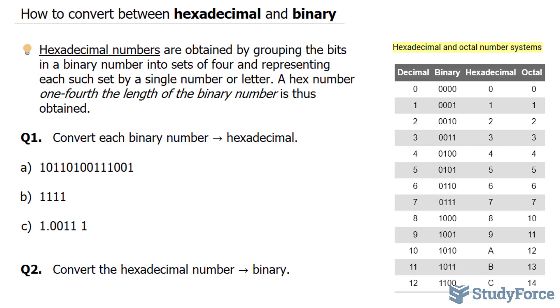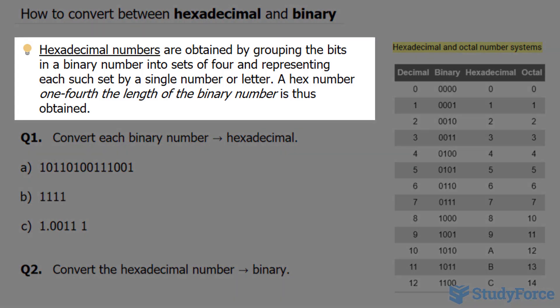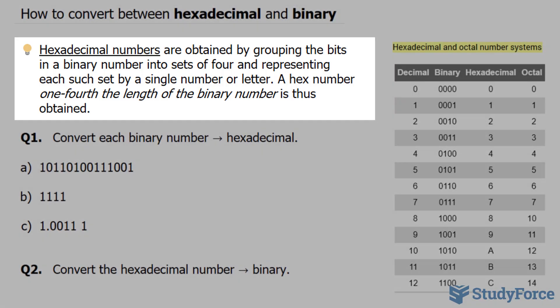In this video, I'll show you how to convert between hexadecimal and binary. Let's start with some theory. Hexadecimal numbers are obtained by grouping the bits in a binary number into sets of four and representing each set by a single number or letter.